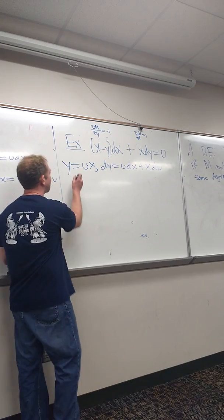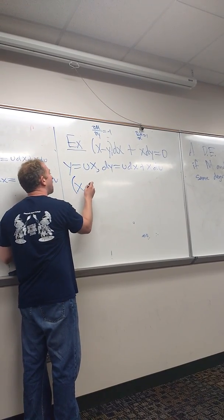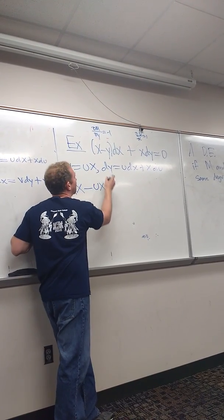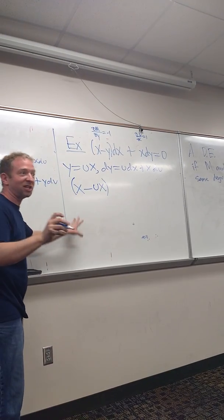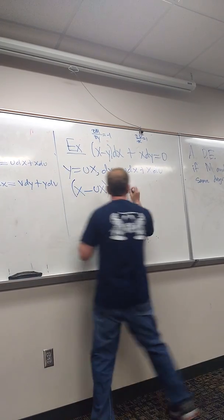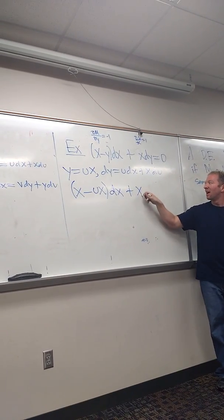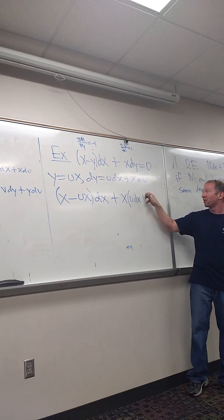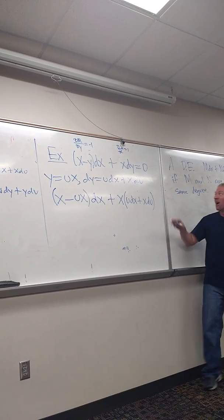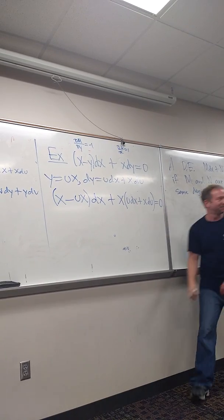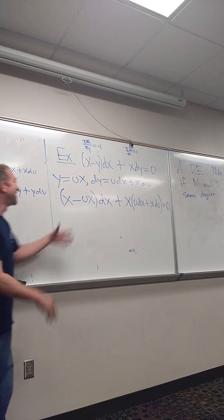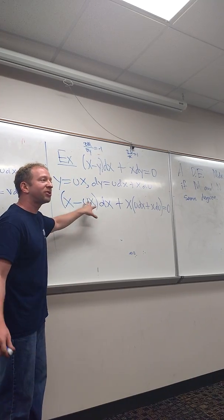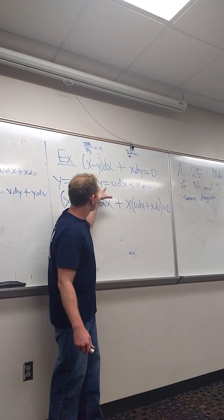We'll make that substitution. So y equals ux and dy equals u dx plus x du. We're carefully going to make the substitution. So x is still x, y is ux times dx, and then dy is this beast — u dx plus x du. So we choose u dx plus x du. It's not that bad — this is like number one on the homework. And all of this is equal to zero.